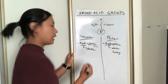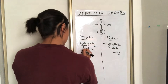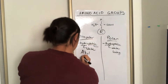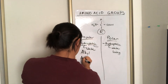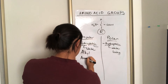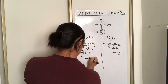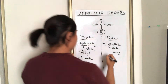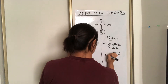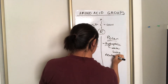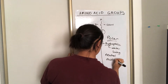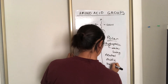Under non-polar, we have aliphatic groups and aromatic groups. And then under polar, we have neutral, acidic, and basic.